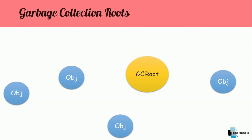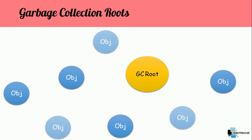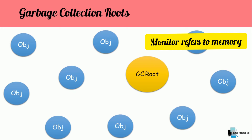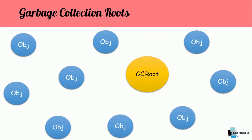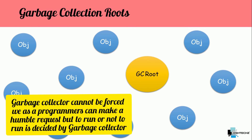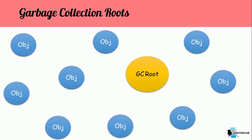Next let's take a look at garbage collection roots. As our program executes it keeps on generating objects. At a certain point the memory is full of objects and the garbage collector will feel the need to collect them. In order to do that it uses GC roots. GC roots are the initial point from where the garbage collector starts tracking the live objects.